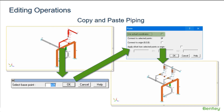When pasting a segment into a model as a branch, a welding tee is created by default. Segment rules apply when using the paste command, and clipboard files may not be copied at either bends or component start points.